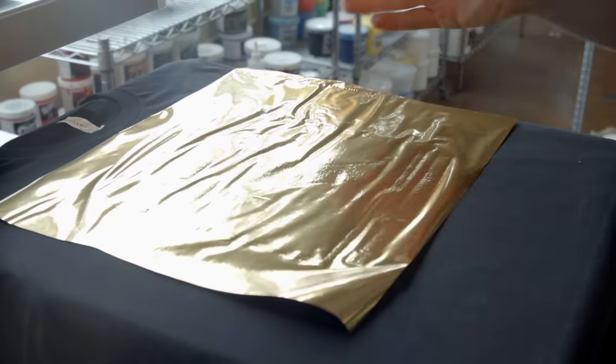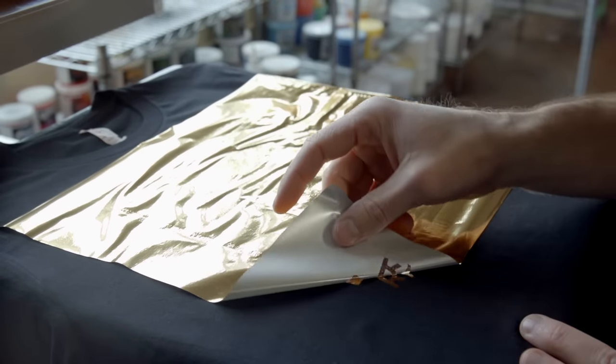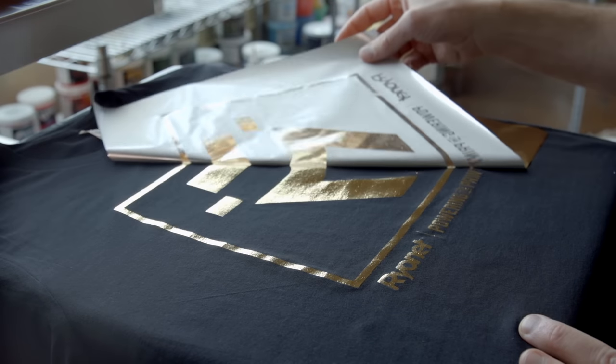Put your foil face up, heat press for 10-12 seconds, let the shirt cool down so the transfer can stick to the garment, and then peel.